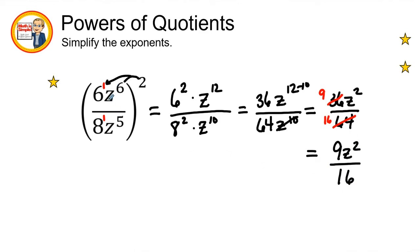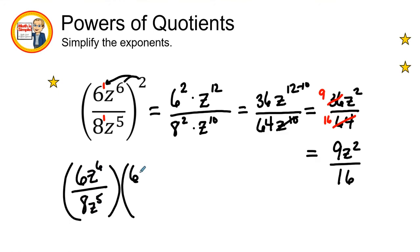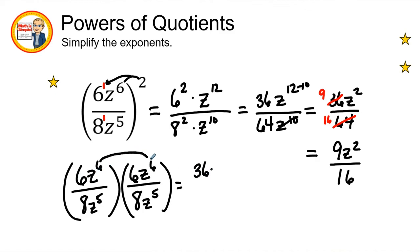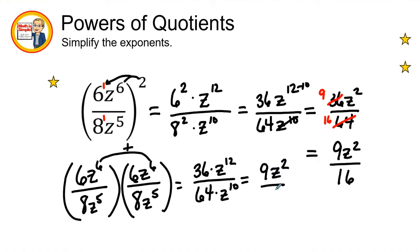We can verify this by duplicating, since the exponent is 2: 6z⁶ over 8z⁵ times 6z⁶ over 8z⁵. In the numerator, 6 times 6 is 36, and adding the exponents gives z to the 12th. In the denominator, 8 times 8 is 64, and 5 plus 5 gives z to the 10th. This reduces to 9z squared over 16 — the same answer.